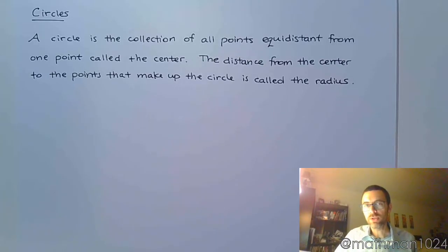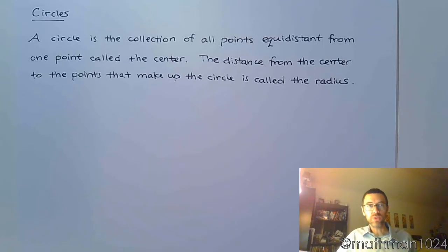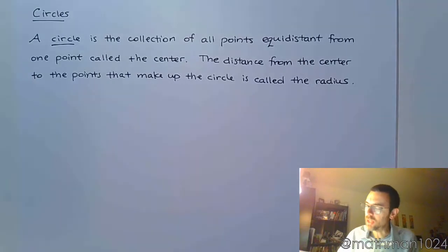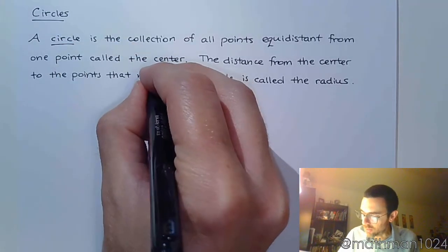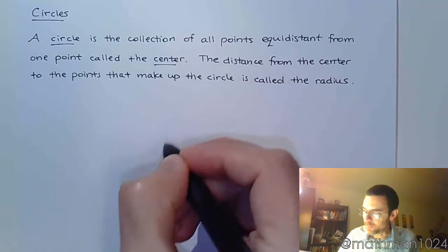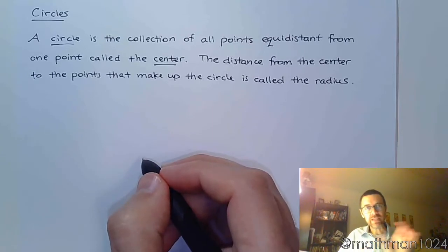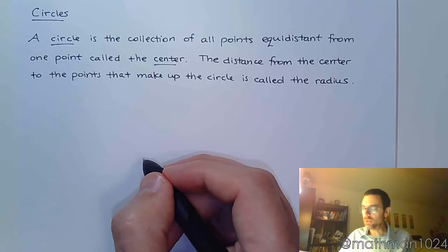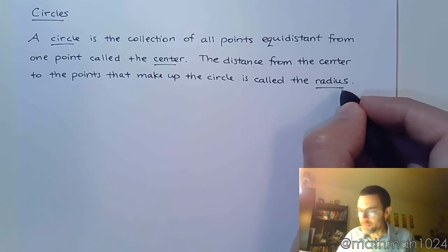And now we're going to move on to circles — graphing circles and working with their equations. A circle is the collection of all points equidistant from one point called the center. And that equidistant distance between the center and the points that form the circle is called the radius.